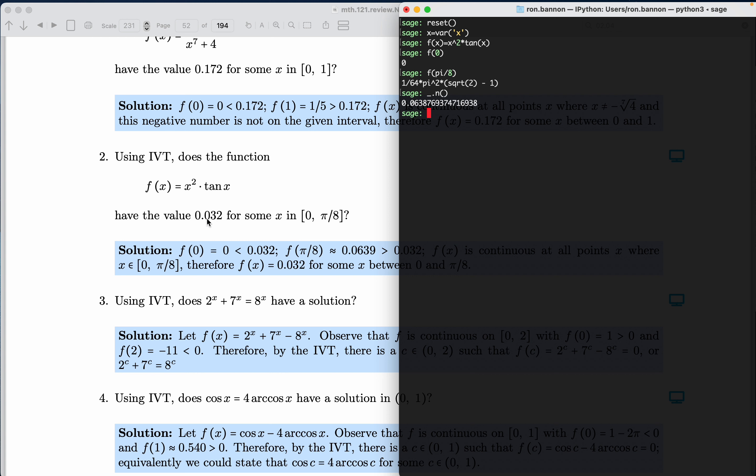Now the number they want to know is, is that number that they're giving me, which is 0.032, is that between 0 and that number over there. And I hope that's pretty obvious to you that 0.032 is between 0 and 0.638.